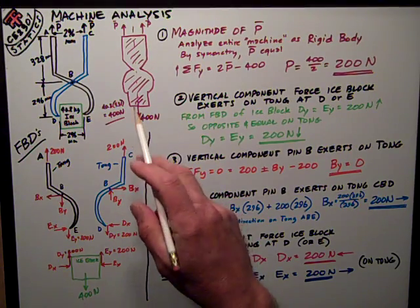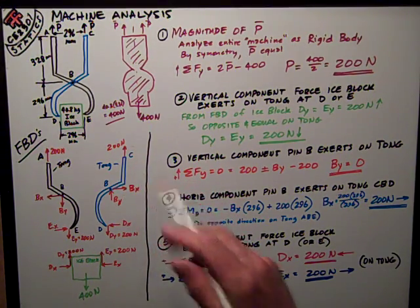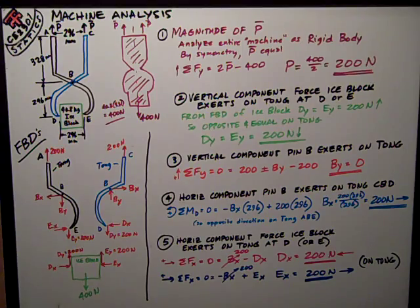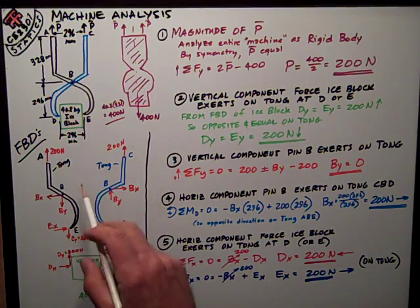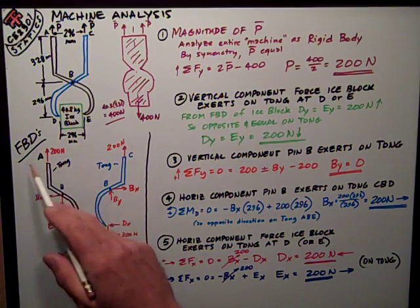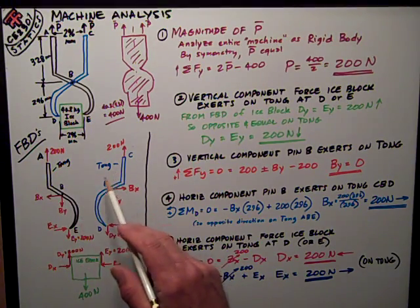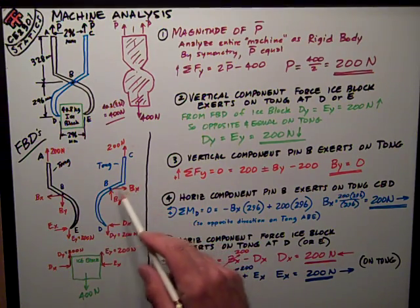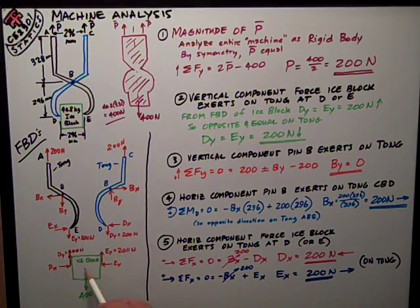Second step in machine analysis, frame analysis, is to break the thing up into parts and pieces so that you can analyze them and get more equations of equilibrium to use to solve it. So I break this up into really three free body diagrams. The two pieces of the two tongs, and then the ice block.